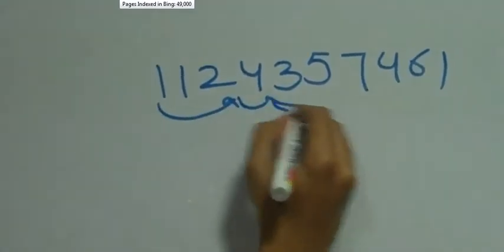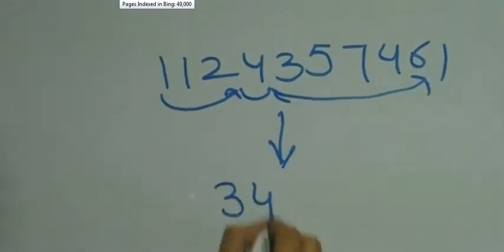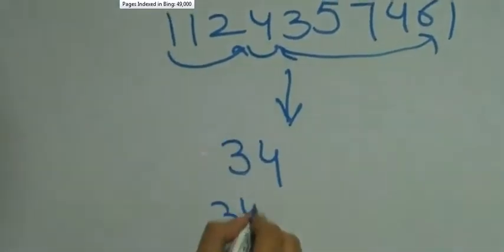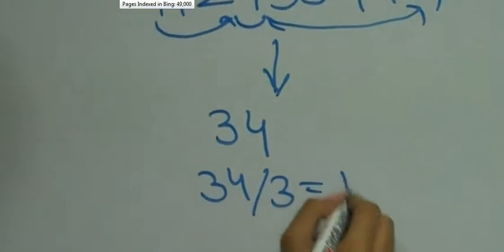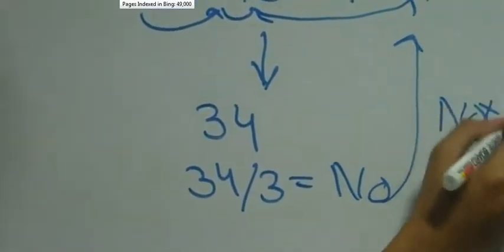We would sum the digits and see. The sum constitutes 34, and we know 34 is not divisible by 3. So our whole number is not divisible by 3.